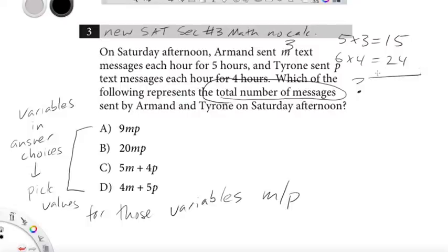So anyway, 15 plus 24, 5 plus 4 is 9, 1 plus 2 is 3, so the answer is 39. Now of course none of these answers are going to say 39, but one of them when you put in the fact that we chose M equals 3, and don't forget to label these things. So M equals 3 and P equals 6. These are our variables.